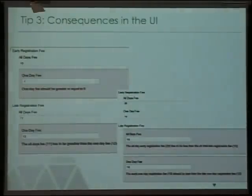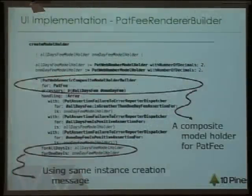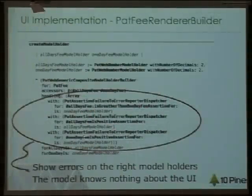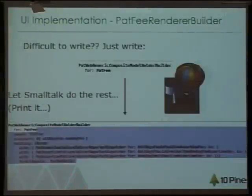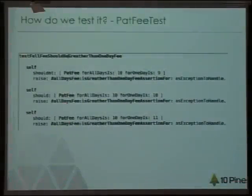If you look at the assertions about the fee that are not being held, it's very easy to show that in the UI. The idea is to have a composite model holder where you say: if this assertion does not hold, show it in this model holder; if this assertion doesn't hold, show it in that model holder. It's very easy to implement — you don't have to write all these things yourself; we have Smalltalk, so Smalltalk does it for you. This also works well with tests.